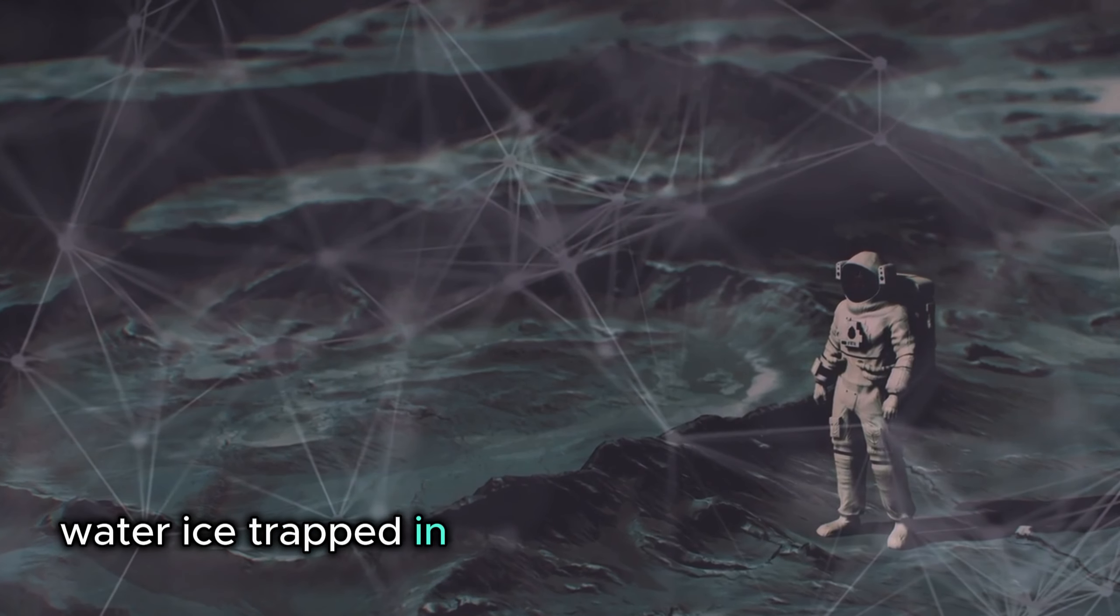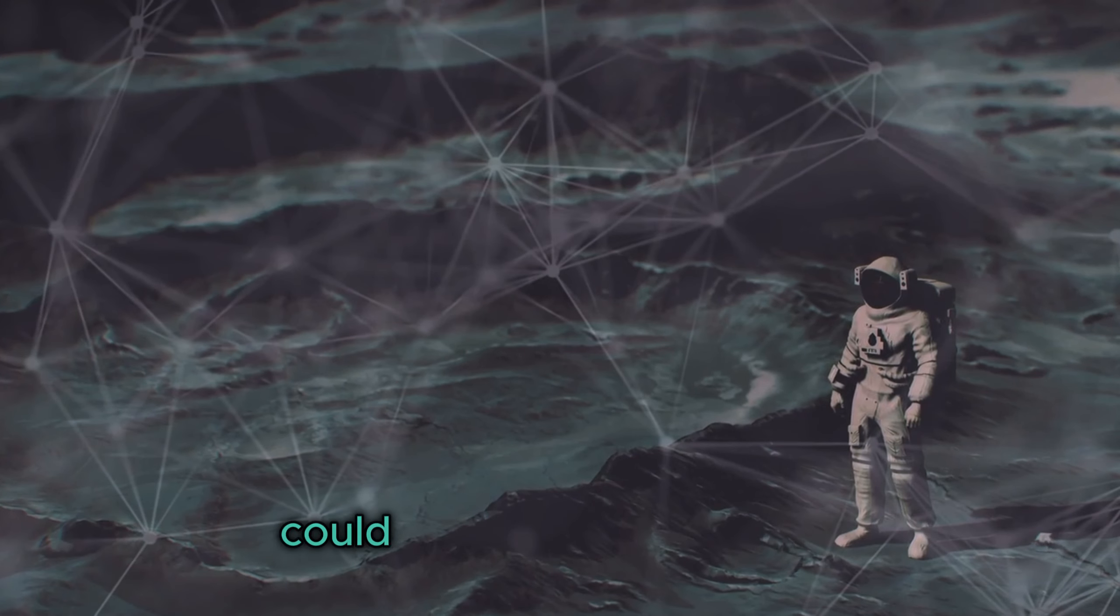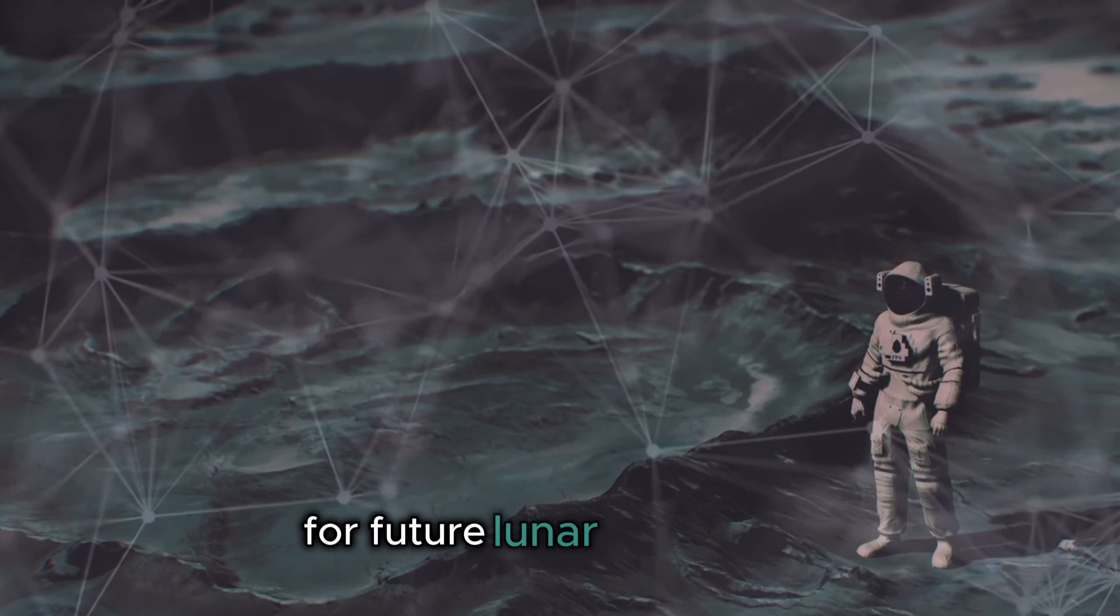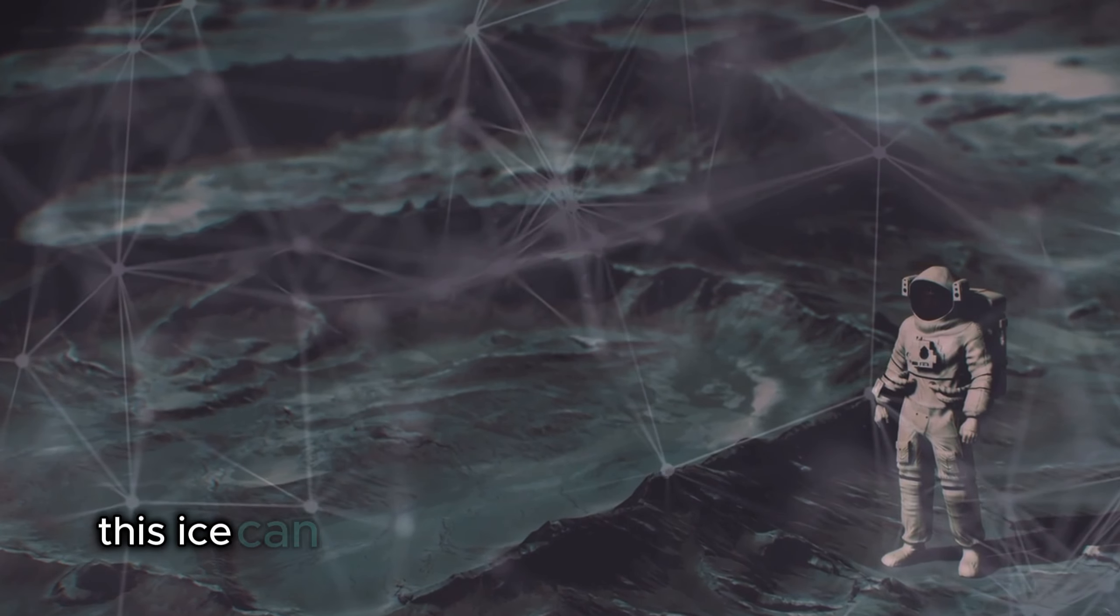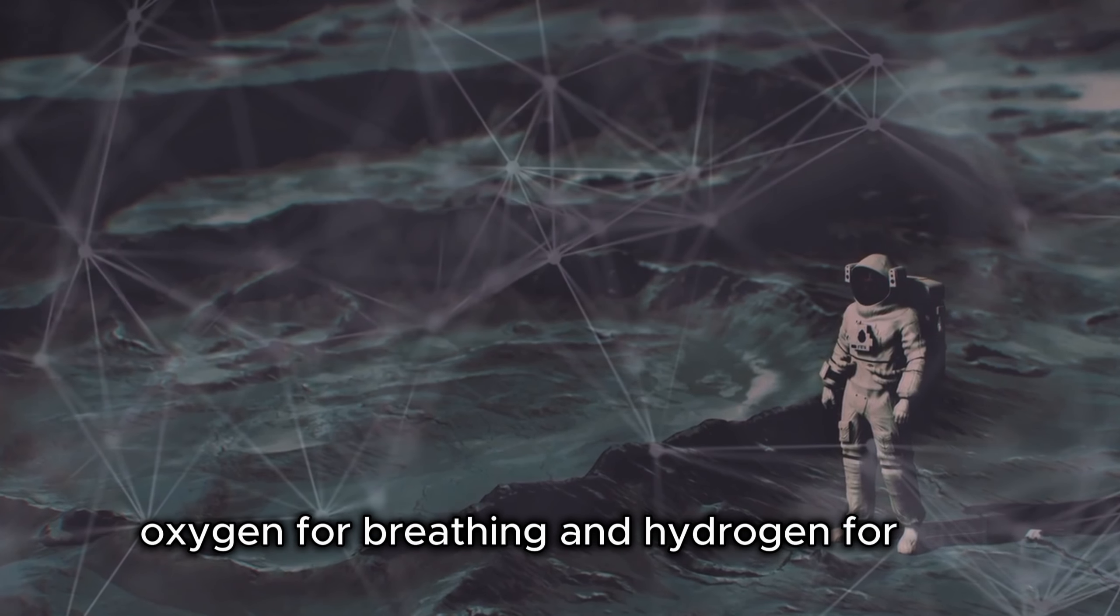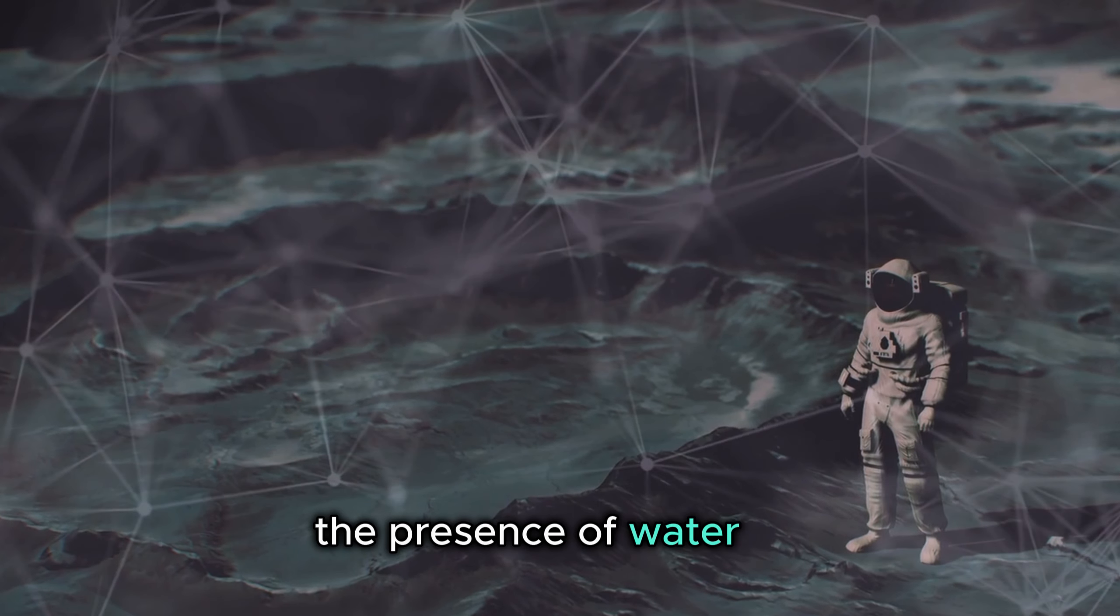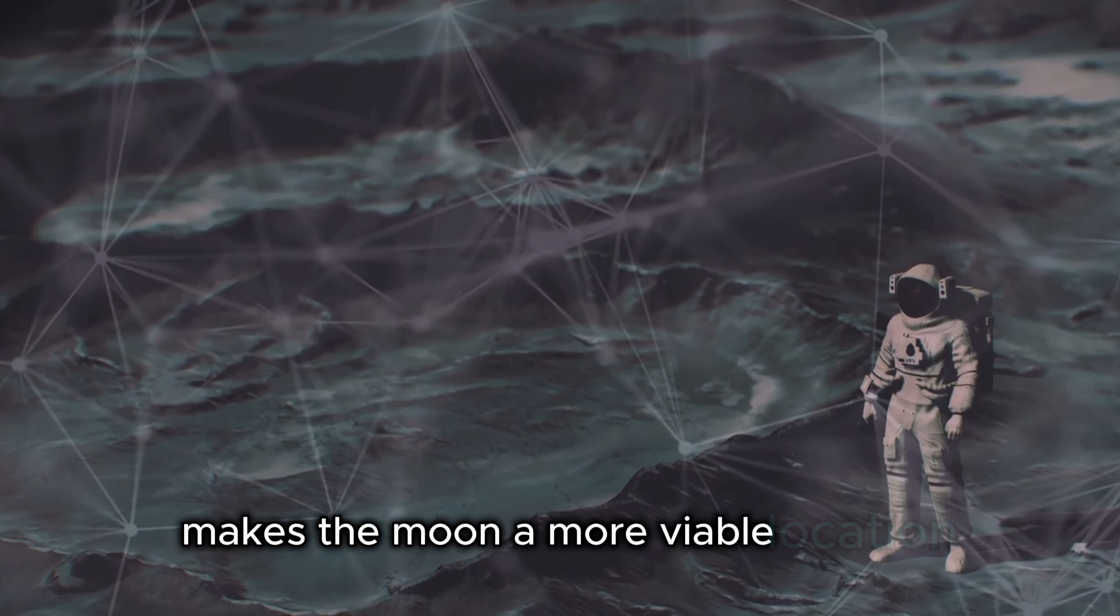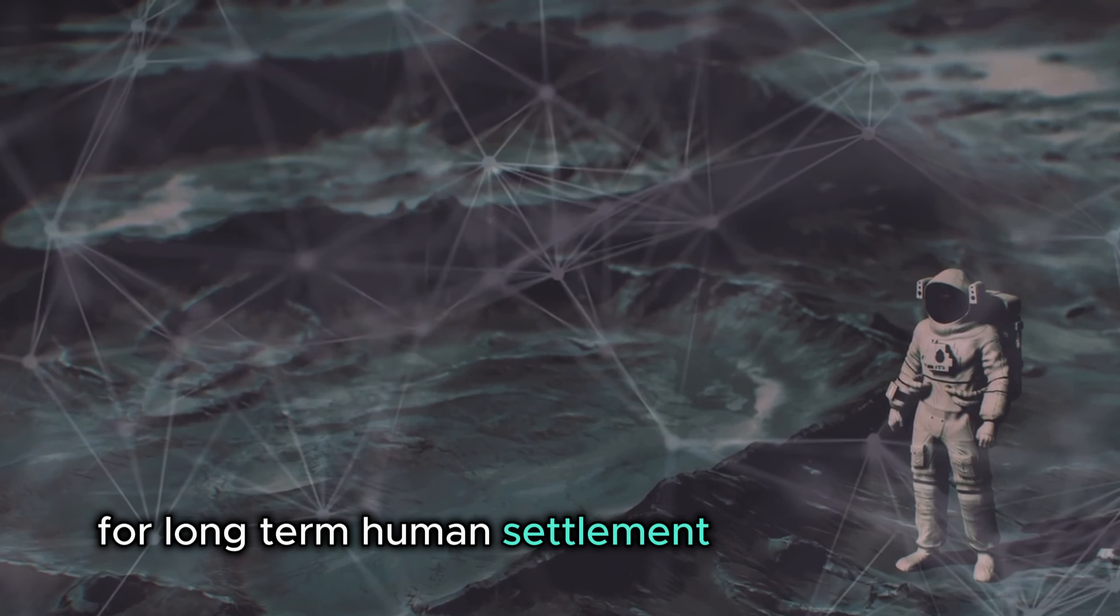Water ice, trapped in permanently shadowed craters, could be a valuable resource for future lunar inhabitants. This ice can be converted into water for drinking, oxygen for breathing and hydrogen for fuel. The presence of water ice makes the Moon a more viable location for long-term human settlement and exploration.